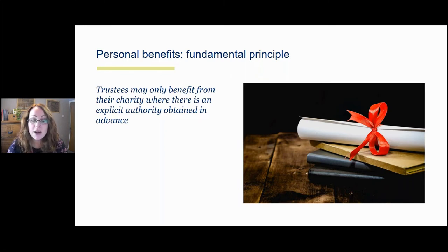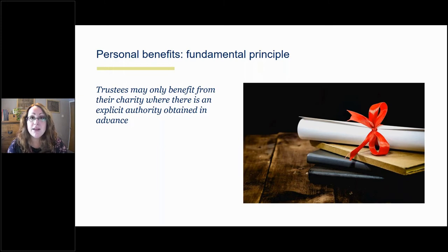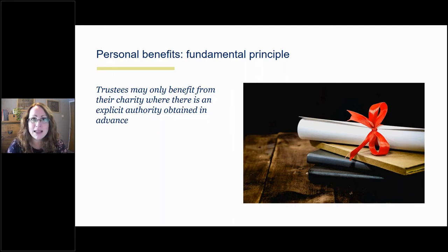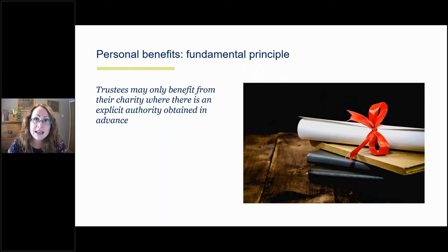Personal benefits include situations where you could receive property, loans, goods, or services from the charity. Authority is required where there is a possibility of benefit — you have to ensure you've got authority for any situations where you could benefit, irrespective of whether there is an actual benefit. To illustrate: if you were purchasing land from the charity and you were paying full market value, so you weren't deriving any benefit, you've entered into a competitive bidding process — there's no benefit to you at all — you still need to get authorisation because you are receiving something from the charity. You are receiving its land, even at full market value, and it is still a transaction that gives rise to a need for authorisation.